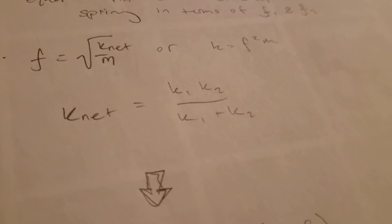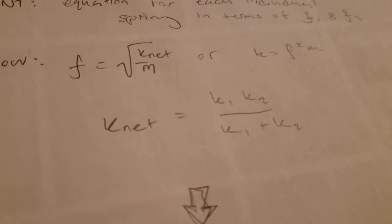I would say this is the biggest pitfall for this problem. Personally, I just got confused. I assumed k_net would just be the sum of the spring constants, but it is in fact this ratio instead.